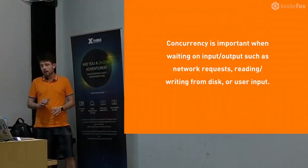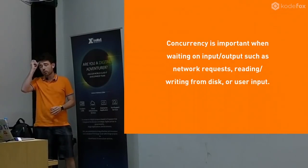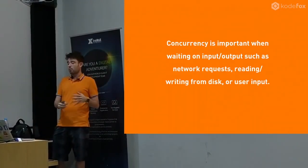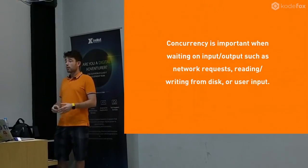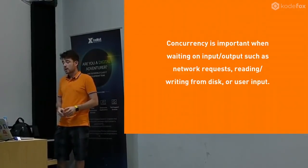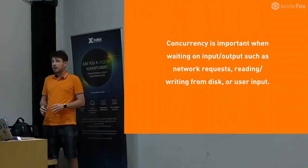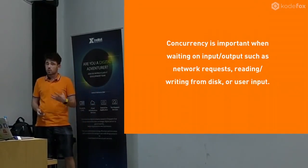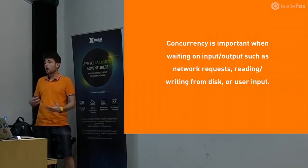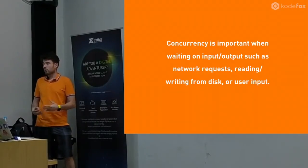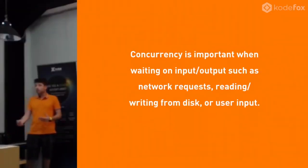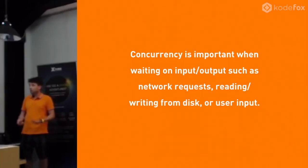Concurrency is specifically important when we're dealing with input/output — things like network requests, user input, and reading and writing from disks. Anything that is considered an asynchronous type of activity — something where the CPU needs to stop and wait for the user to do something, or stop and wait for some data to arrive from the database or the network.